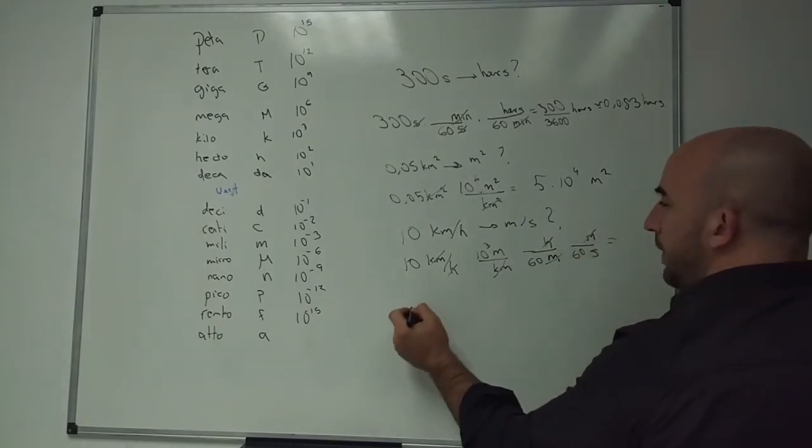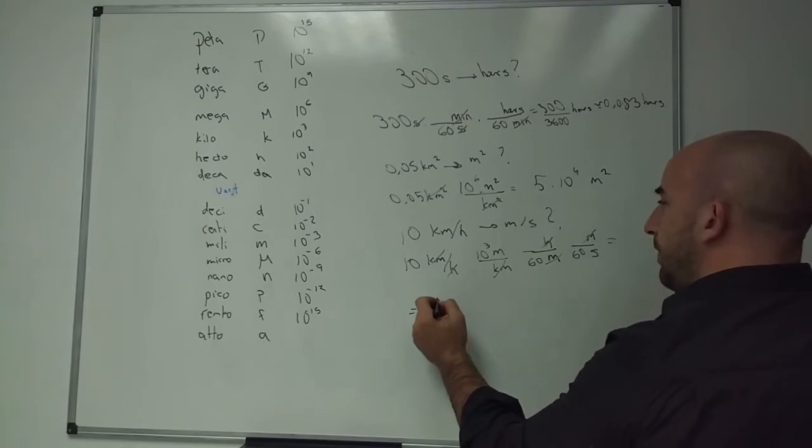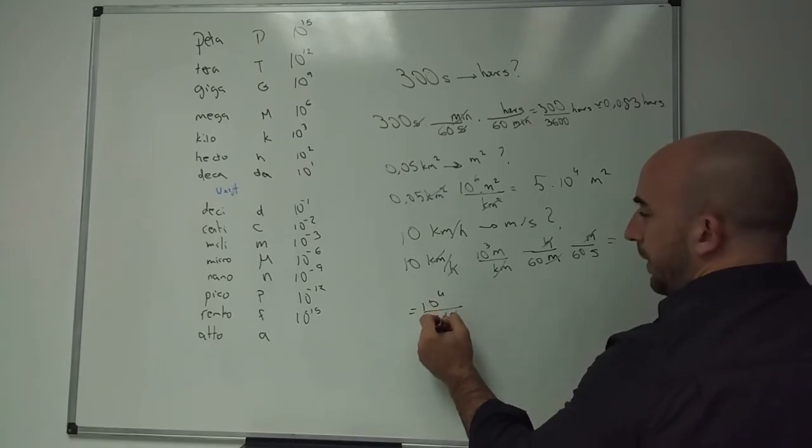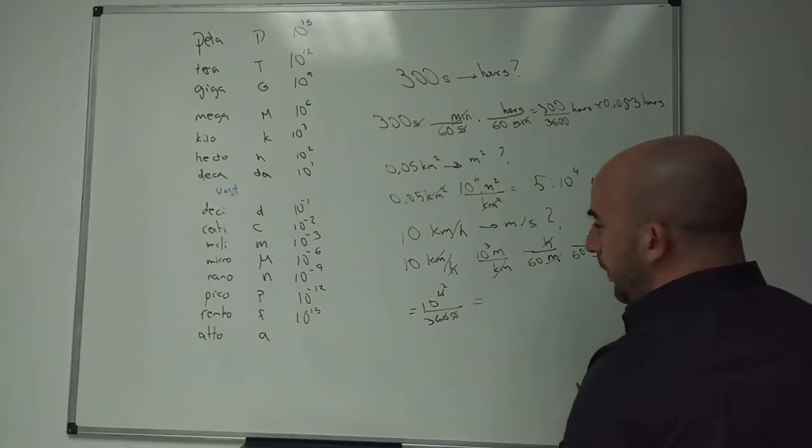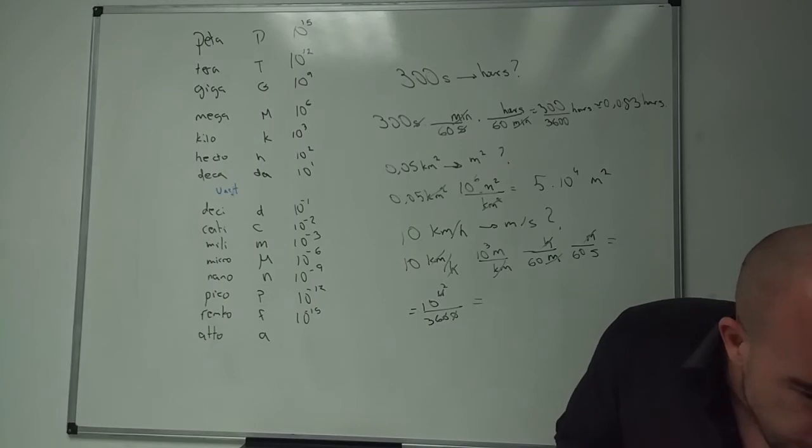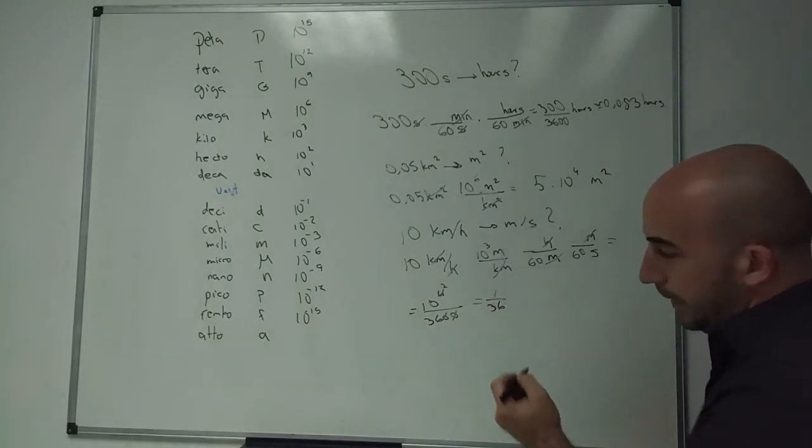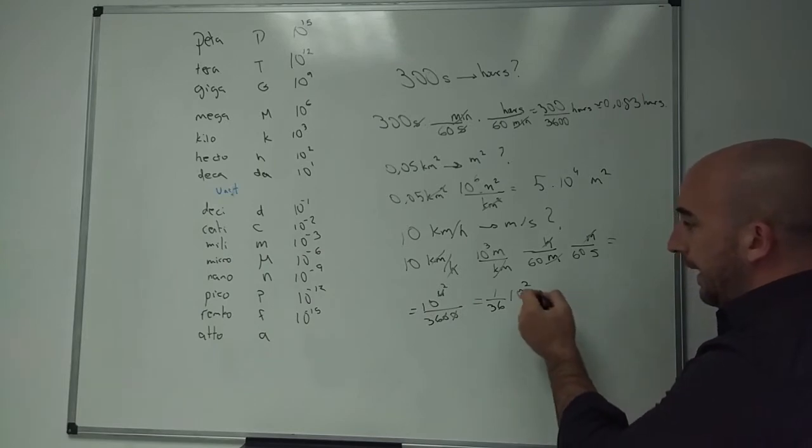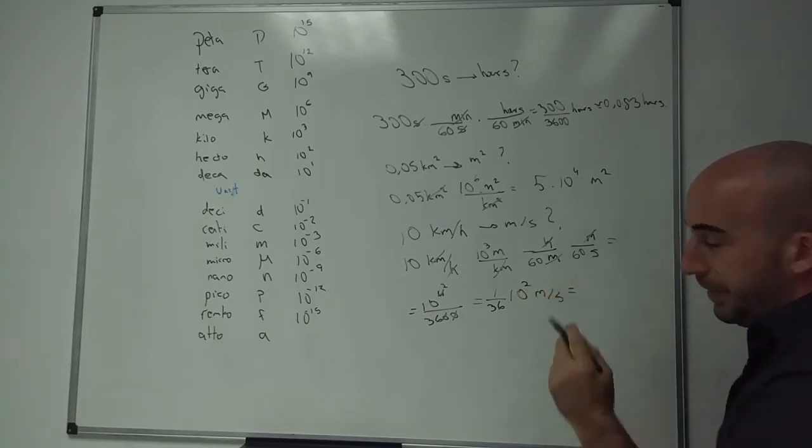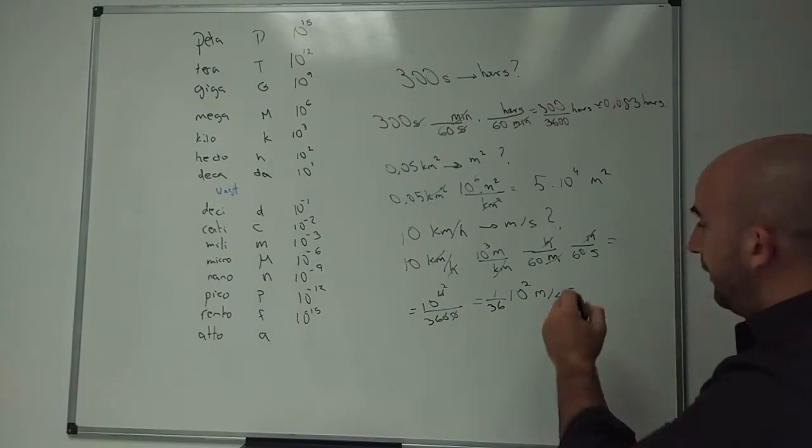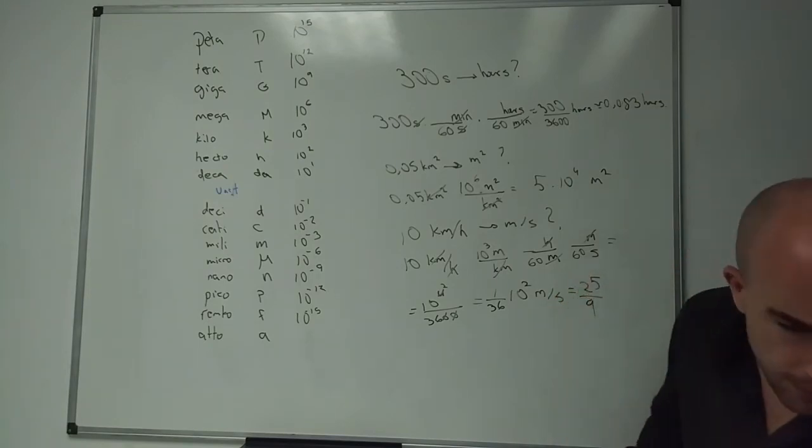So in the end, you have 10 to the power of 4 divided by 3,600. So that would be 1 over 36, 10 to the power of 2, which is meters per second, which is 25.9 meters per second.